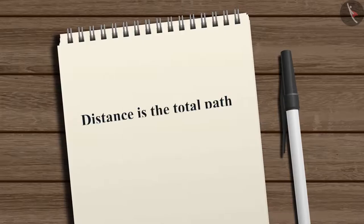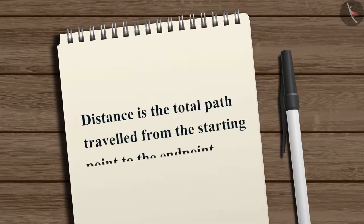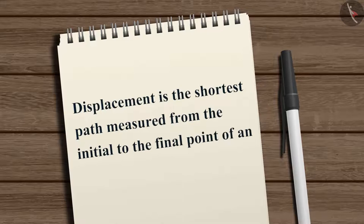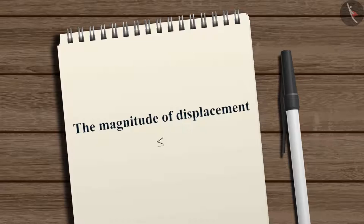Distance is the total path traveled from the starting point to the end point. The shortest path measured from the initial point to the final point is known as displacement. Always remember that the magnitude of displacement is less than or equal to the distance.